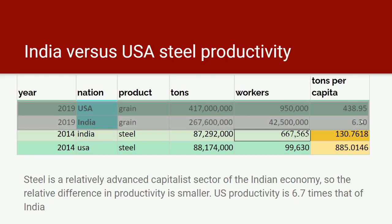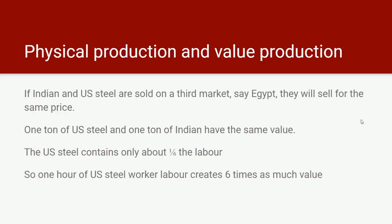Steel is a relatively advanced capitalist sector of the Indian economy, so the relative difference in productivity between the US and India is much smaller than in agriculture. It's a large-scale capitalist industry in both cases. But American capitalism is still 6.7 times as productive, and therefore an American worker producing steel produces 6.7 times as much value. If Indian and US steel are sold on a third market — say in Egypt — they'll both sell for the same price. One ton of US steel and one ton of Indian steel have the same value, but the US steel contains about one-sixth the labour. So one hour of a US steel worker creates six times as much value as one hour by an Indian steel worker.